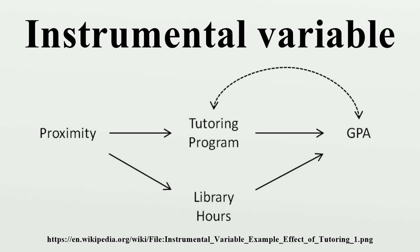Now, suppose that a student's natural ability affects his or her number of hours in the library as well as his or her GPA. As in figure 3, using the causal graph, we see that library hours is a collider, and conditioning on it opens the path proximity → library hours → GPA. As a result, proximity cannot be used as an instrumental variable.